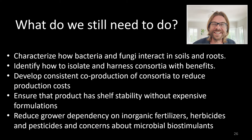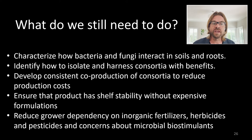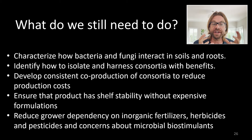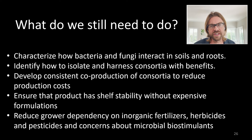Wrapping up — what do we still need to do? We need to characterize how bacteria and fungi interact in both soils and roots. We also need to identify how to isolate and harness consortia with those benefits, and then develop consistent co-production of consortia to reduce production costs. Ensuring the product has shelf stability without expensive formulations is really important — if it's going to be accessible, it has to be cheap and stable. We also need to reduce growers' dependency on fertilizers, herbicides, and pesticides, and get them confident in using more sustainable practices.